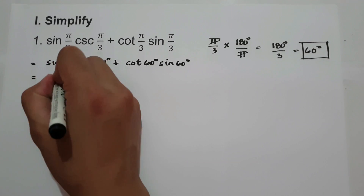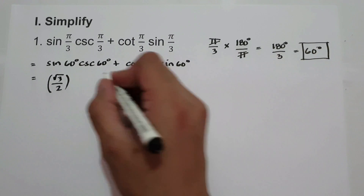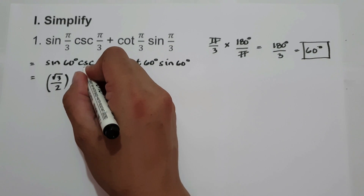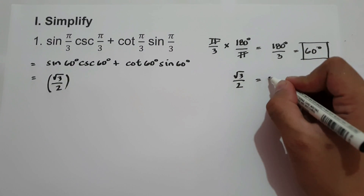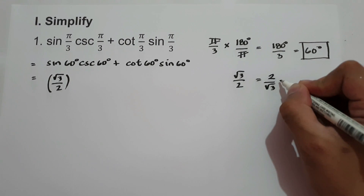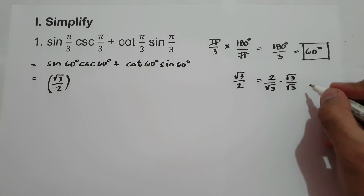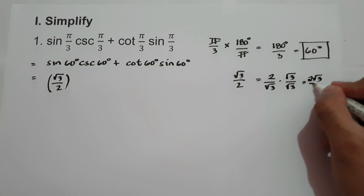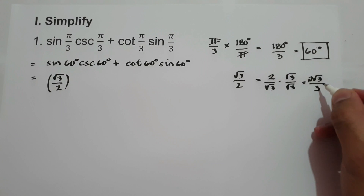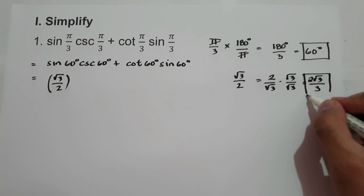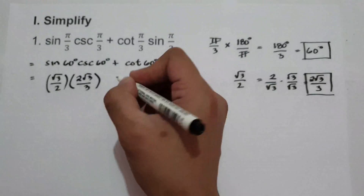Sine 60 degrees equals square root of 3 over 2. The reciprocal of sine is cosecant, so cosecant 60 equals 2 over square root of 3. We rationalize by multiplying square root of 3 on numerator and denominator, giving us 2 square root of 3 over square root of 9, and square root of 9 is 3. So cosecant 60 equals 2 square root of 3 over 3.